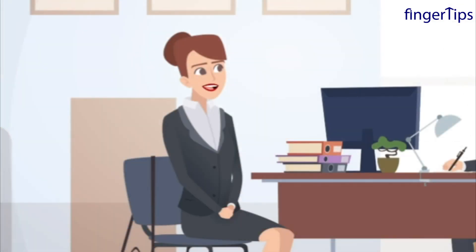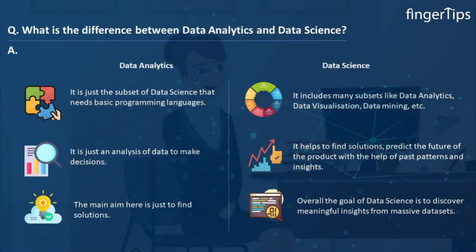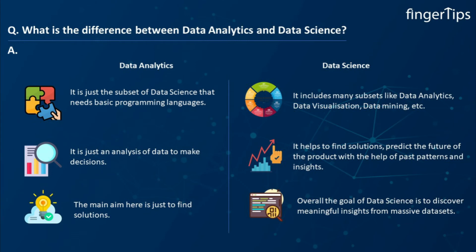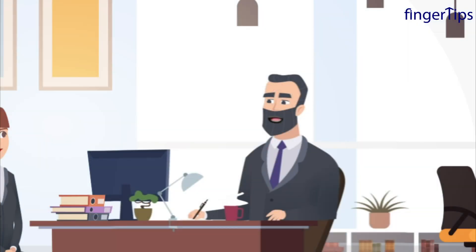What is the difference between data analytics and data science? Data analytics is just a subset of data science that requires basic programming languages. In simple words, it is just the analysis of data to make decisions, with the main aim being to find solutions. Data science, on the other hand, is a broad technology that includes many subsets like data analytics, data visualization, and data mining. It requires advanced programming languages and not only helps find solutions but also predicts the future of a product using past patterns and insights. Overall, the goal of data science is to discover meaningful insights from massive data sets.